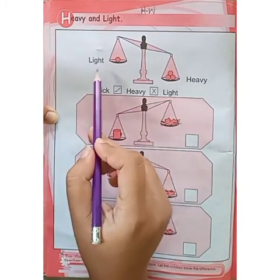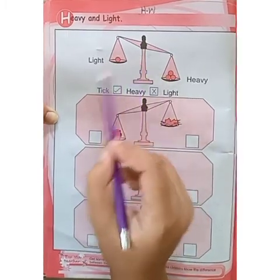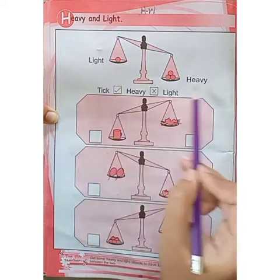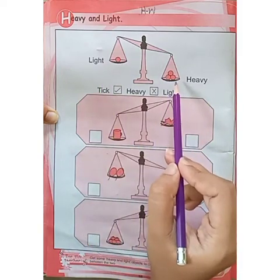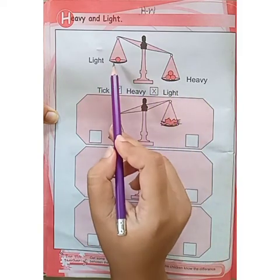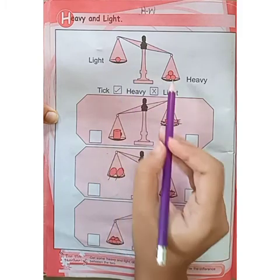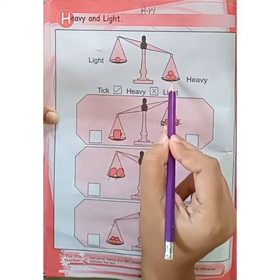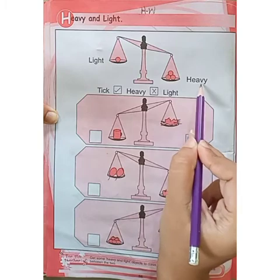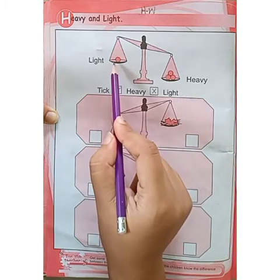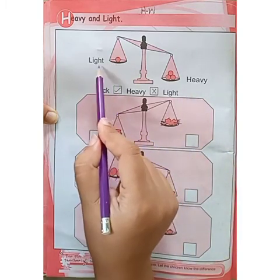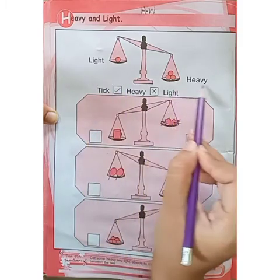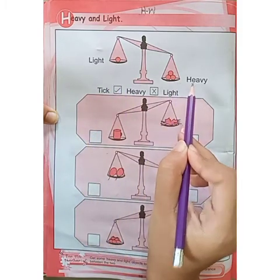Look at the first example. This side is light and this one is heavy. Here is only one ball and here are three balls. Three balls are heavier than one ball. So this side is lighter and this one is heavier.